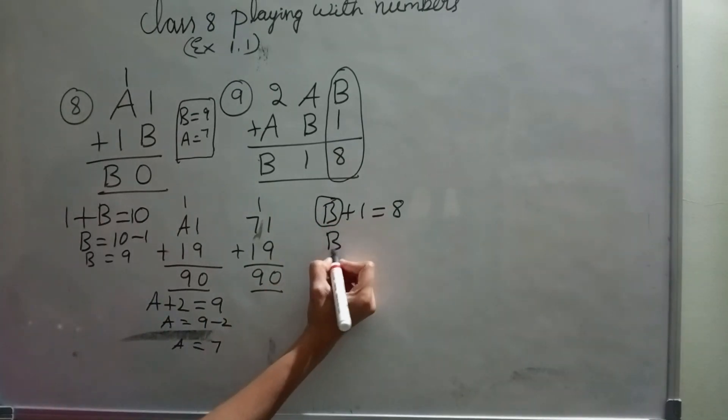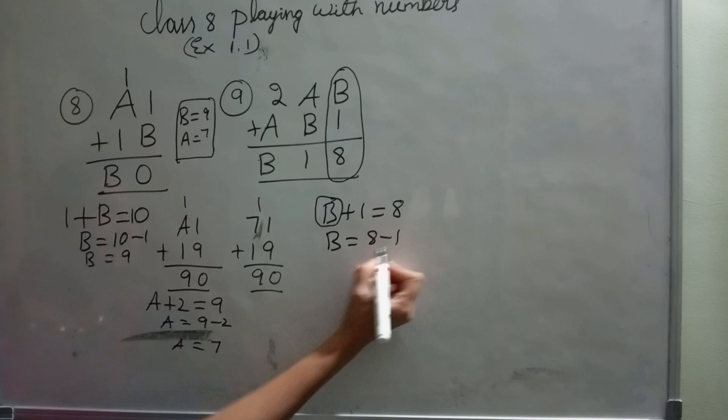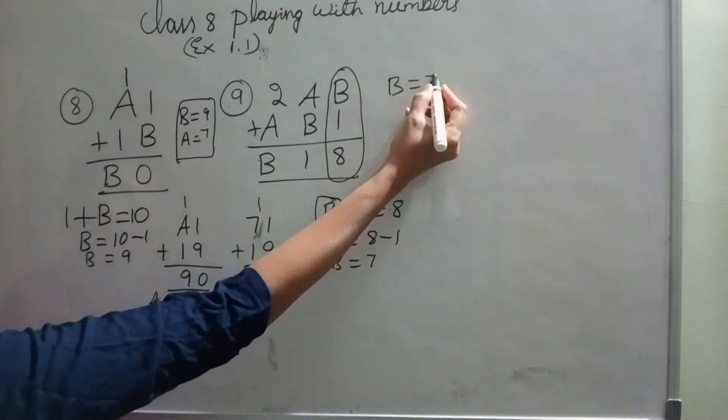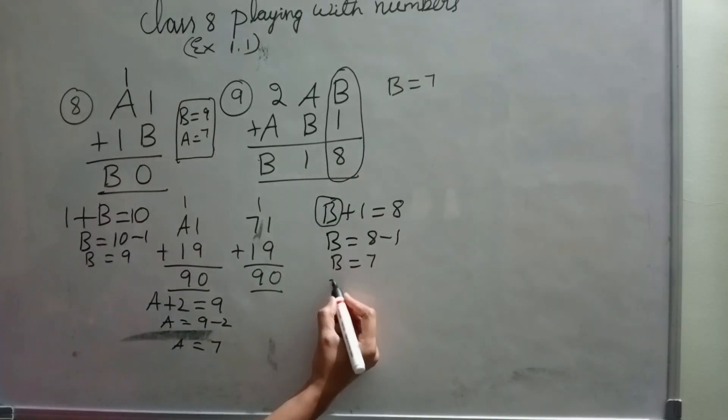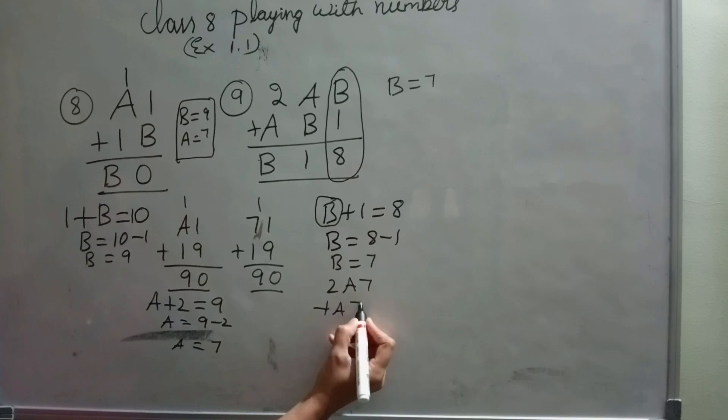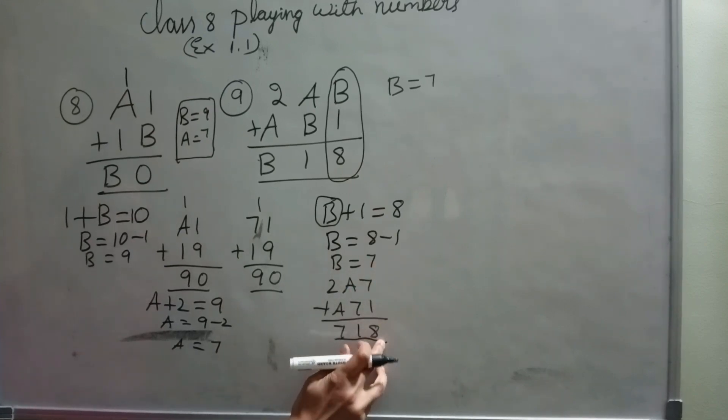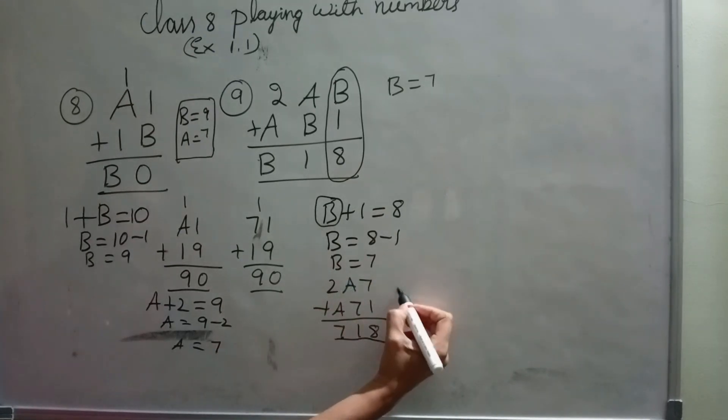Then B value is B equals 8 minus 1. B equals 7. So I got B equals 7. Let's check here. 2A7 plus A71 equals 718. 7 plus 1 is 8. A plus 7.